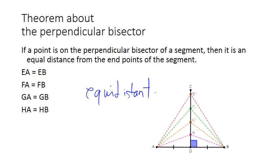Now we have a theorem about the perpendicular bisector. If a point is on the perpendicular bisector of a segment, then it's at equal distance from the endpoints or from the extremities of the segment.